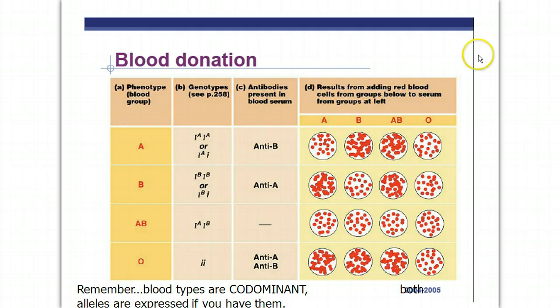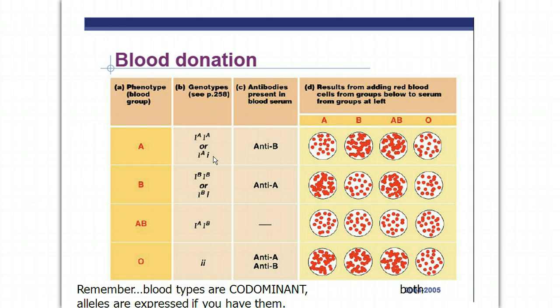There are four different blood types: A, B, AB, and O. For today we're not going to talk about RH negative and positive. If you have type A blood, there are one of two ways to get that: either you're going to be big A, big A, or big A blank. If you don't have any allele for blood types, then you're going to end up being O.